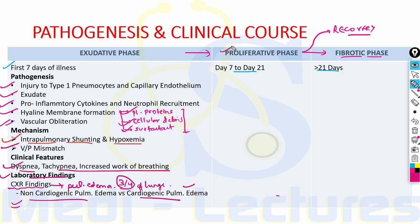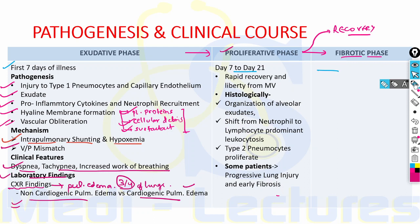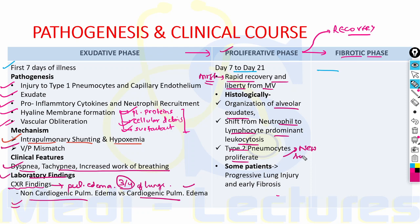From day 7 to day 21 is the proliferative phase. Most patients undergo rapid recovery and liberation from mechanical ventilation. Histologically, this phase is characterized by organization of alveolar exudates, a shift from neutrophil to lymphocyte-predominant leukocytosis, and proliferation of type 2 pneumocytes which form new surfactant and later differentiate into type 1 pneumocytes.